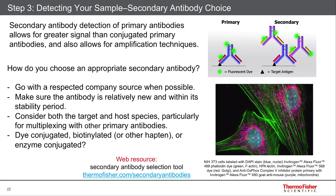Secondary antibody usage is a very common technique. There are lots of review papers out there. But how do you optimize it? This is where your unconjugated primary has been detected with a secondary antibody that has dyes on it.